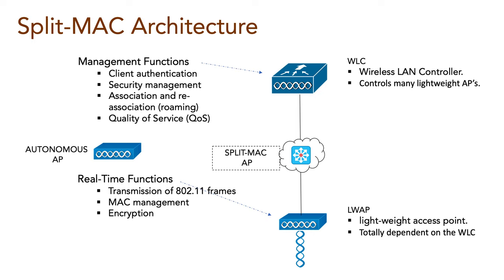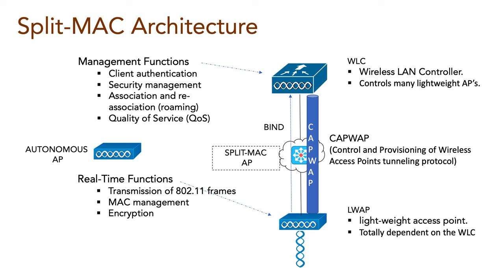In this type of architecture, every AP must boot and bind itself to the WLC to support wireless clients. To carry 802.11 related messages and client data, the WLC and AP use a tunneling protocol called CAPWAP between them. CAPWAP is also known as the Control and Provisioning of Wireless Access Point tunneling protocol.